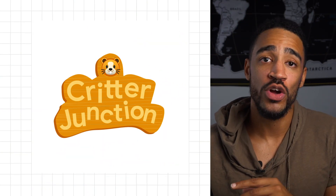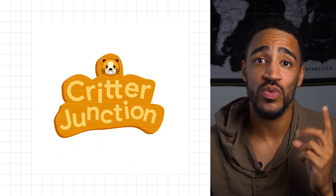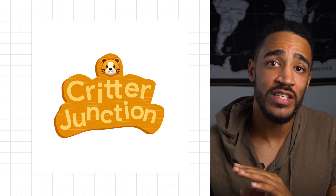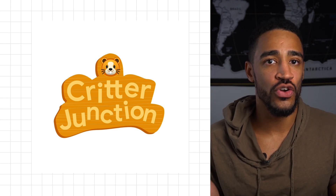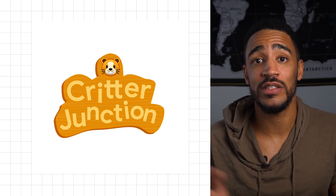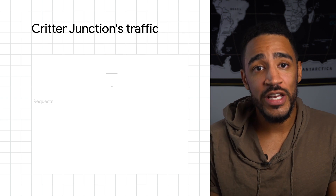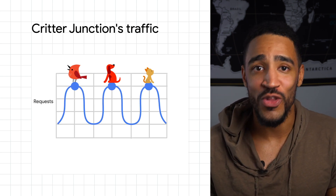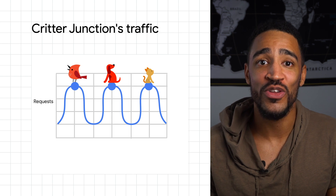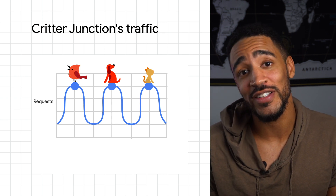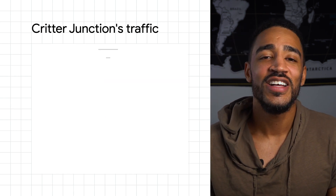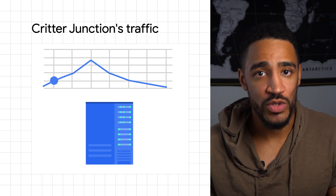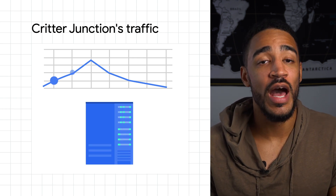Critter Junction has done a lot of great work to be scalable, resilient, and highly available. But their traffic is set to increase exponentially, and they're not sure their current infrastructure can meet those needs. The biggest problem is that Critter Junction's traffic has consistent spikes as people all over the world log on when they're in the mood to play with a virtual pet with their friends. To accommodate this traffic, Critter Junction allocated more resources, but was burning money during non-busy hours.